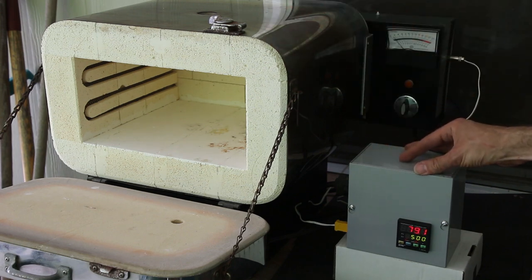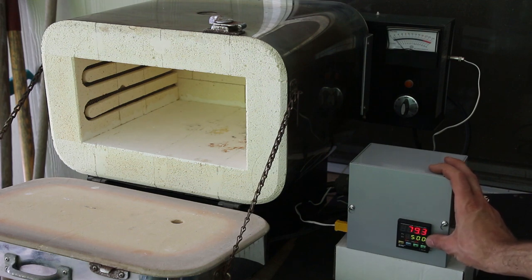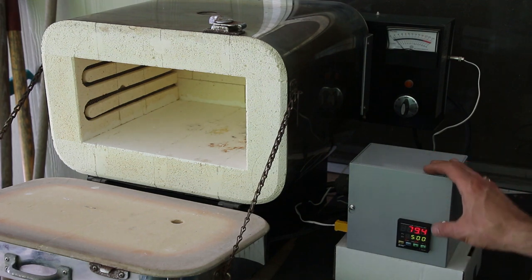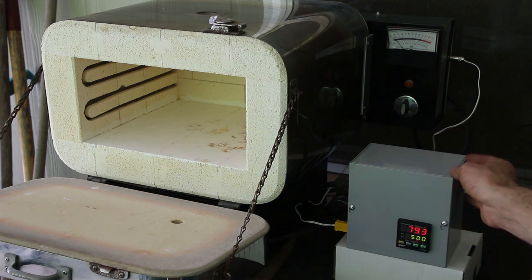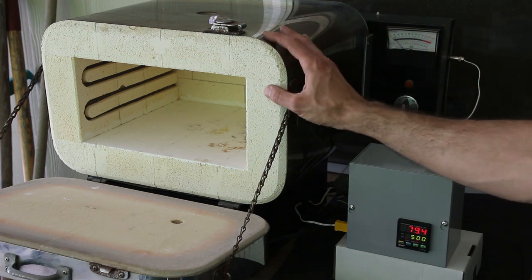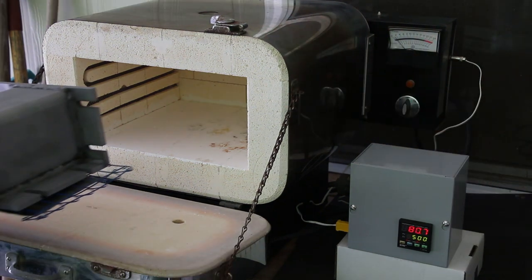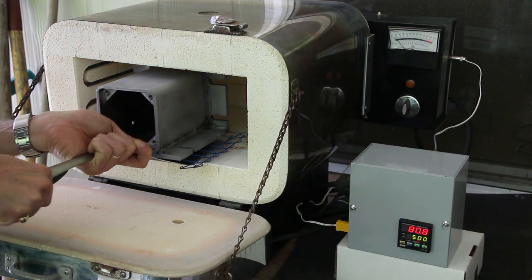I have the temperature controller set at 500 degrees Fahrenheit, which is about 260 degrees Celsius, and that's about 50 degrees Fahrenheit or 30 degrees Celsius above the hottest temperature where I'm going to cook the powder coating itself.